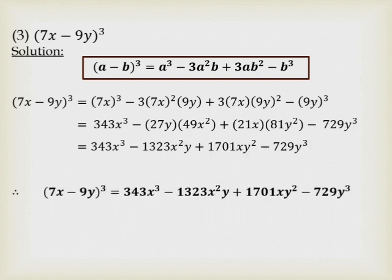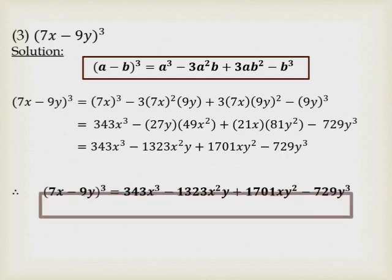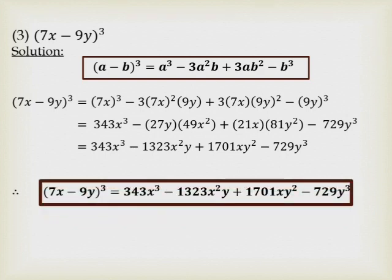So the final answer is: (7x minus 9y) cubed equals 343x cubed minus 1323x squared y plus 1701xy squared minus 729y cubed. Put a box around this answer. Students, follow all these steps carefully. Thank you.